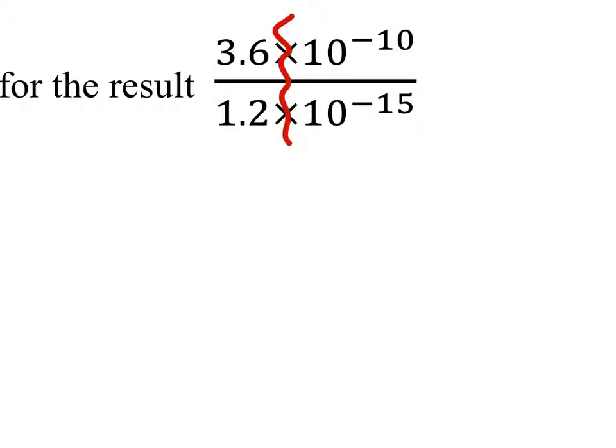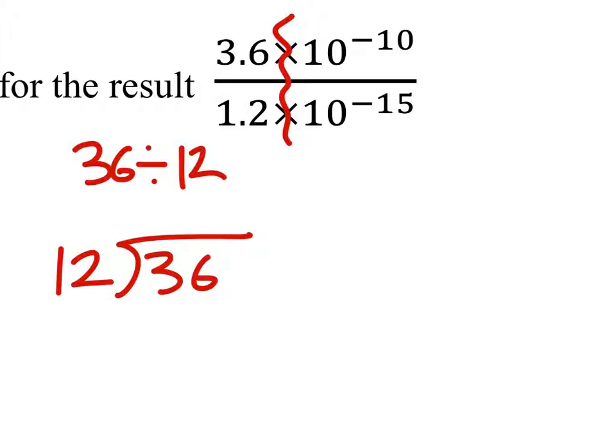So if I move the decimal places over, I really have 36 divided by 1.2, or 36 divided by 12, really. So I got 36 divided by 12, which is 3. Oh, that's pretty nifty. So this whole thing just is 3.